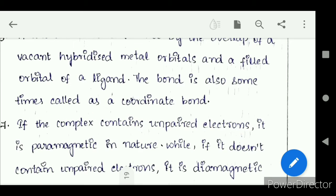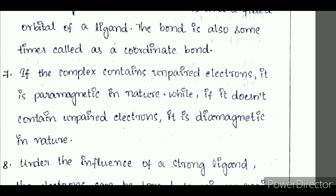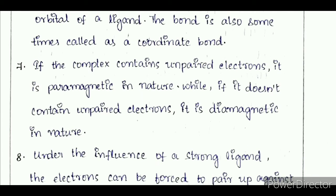If the complex contains unpaired electrons, it is paramagnetic in nature. While if it does not contain unpaired electrons, it is diamagnetic in nature.